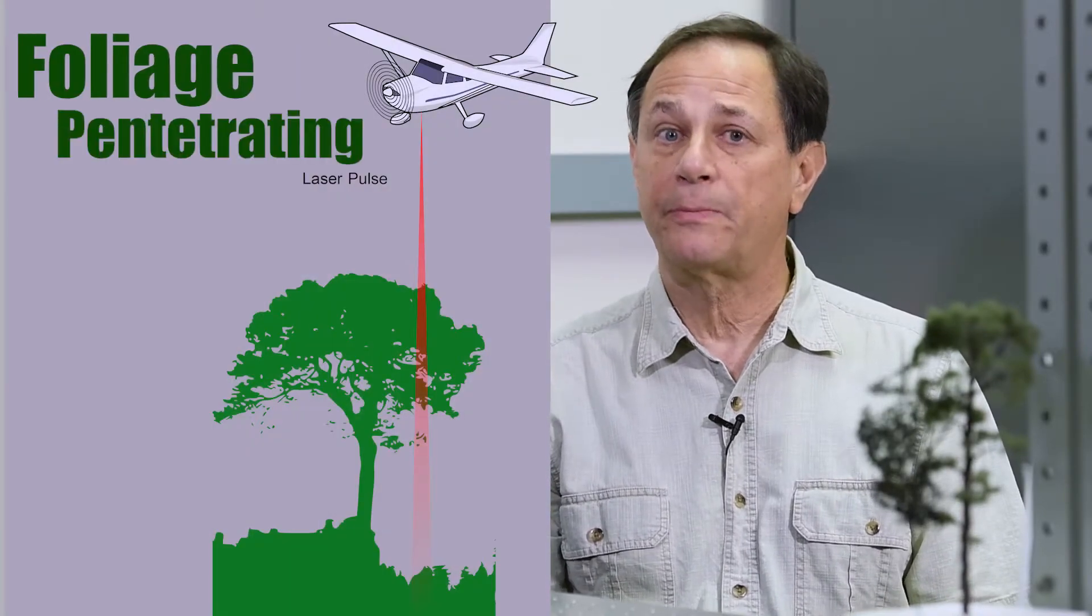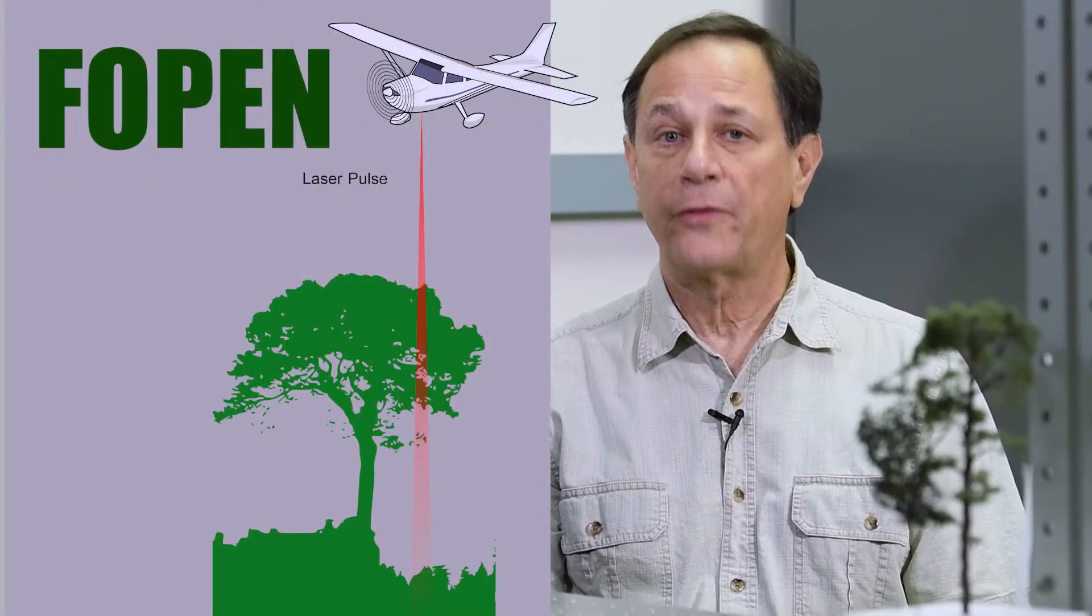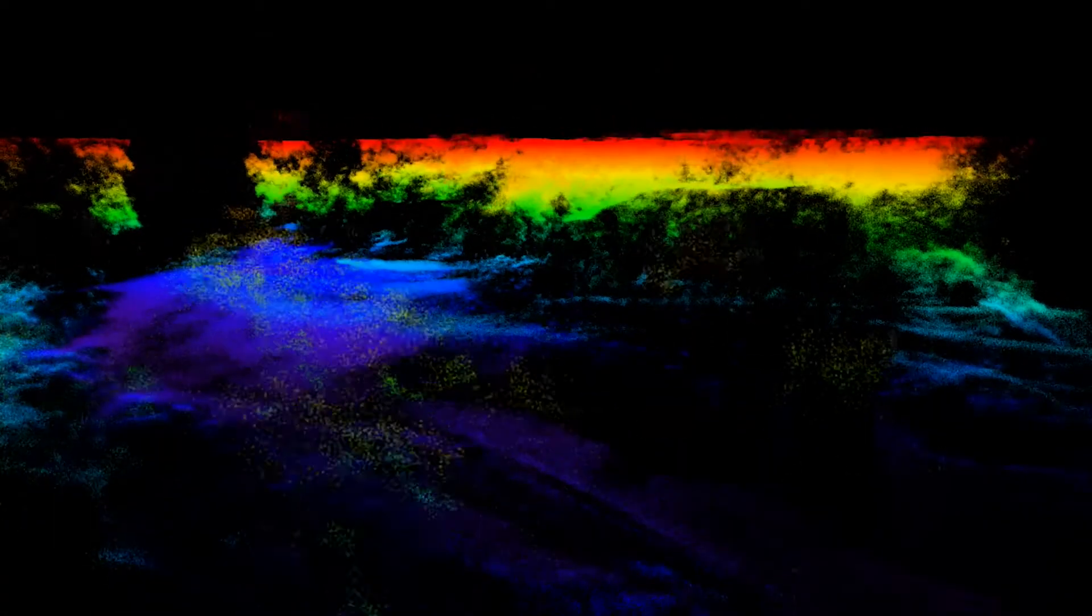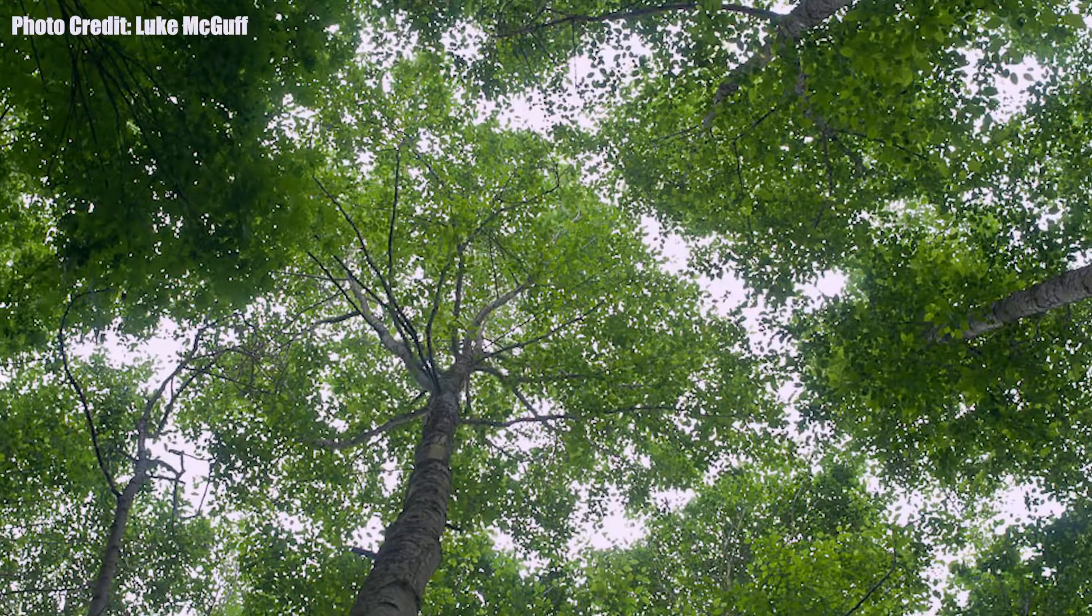There's another variation of LiDAR called foliage penetrating LiDAR, or FOPEN for short, where it can be used to reveal detailed three-dimensional images of objects that are hidden behind a partial obscuration, such as a tree canopy.